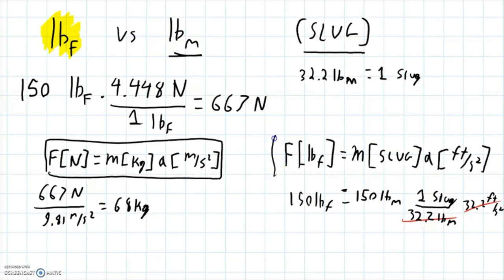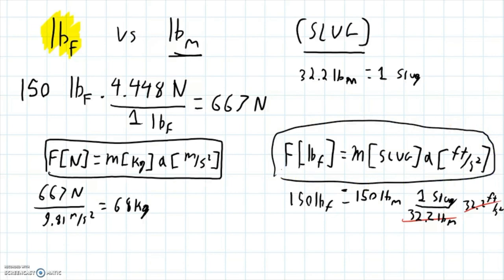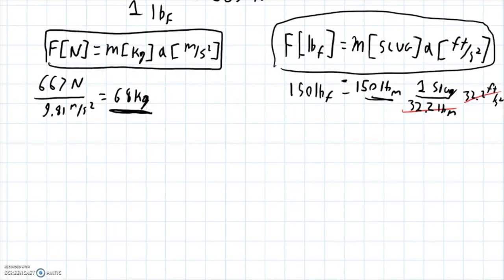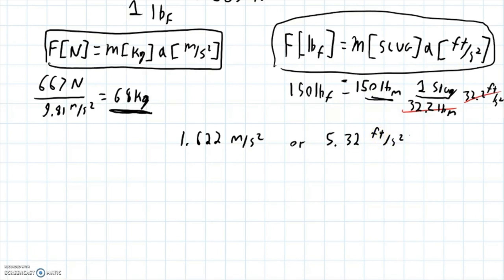This works great on Earth, but we need to realize that if we go to the Moon — or any other planet — our mass stays the same, but our force changes. Our mass stays 68 kilograms, or 150 pounds mass. But the force we exert on the Moon changes because the acceleration due to gravity on the Moon is 1.622 meters per second squared, or 5.32 feet per second squared.